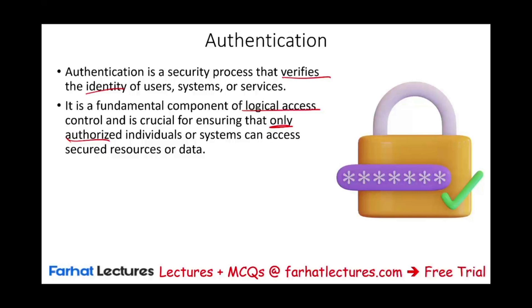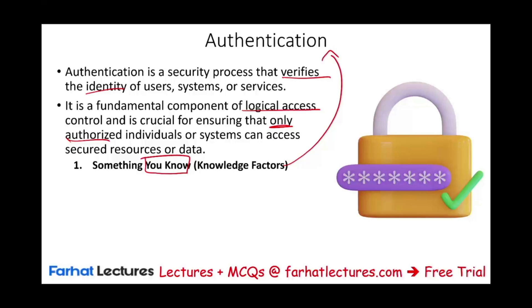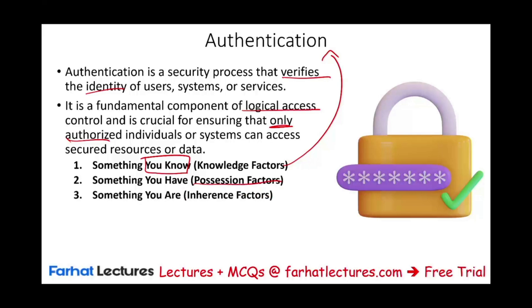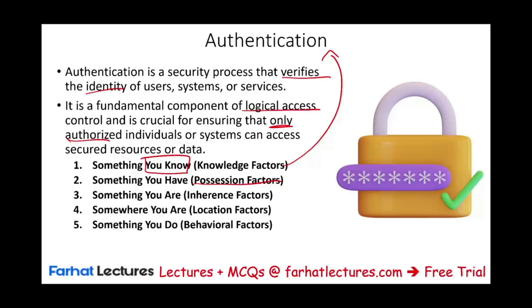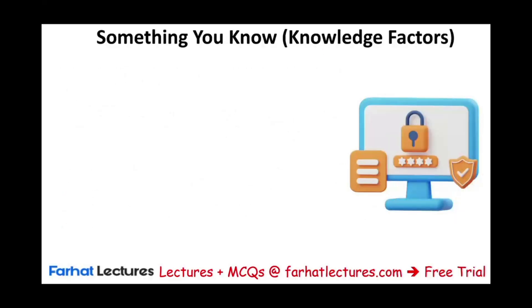How can we provide this authentication? Sometimes it's something you know — through that knowledge factor, we can authenticate you. For example, a password is the simplest example. Sometimes it's something you have — something in your possession. Something you are — an inheritance factor. Somewhere you are — a location factor that authenticates you. Or something you do — behavioral factors. We are going to discuss each one, starting with something you know: the knowledge factor.